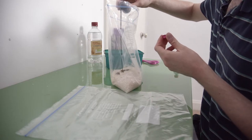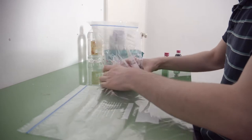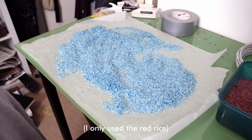In the meantime, I colored the rice using food coloring and some vinegar, and let it dry overnight.